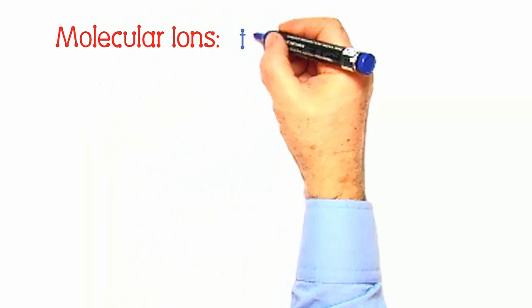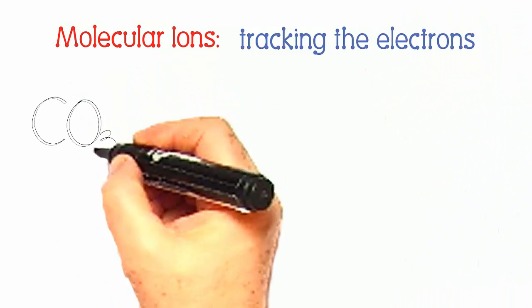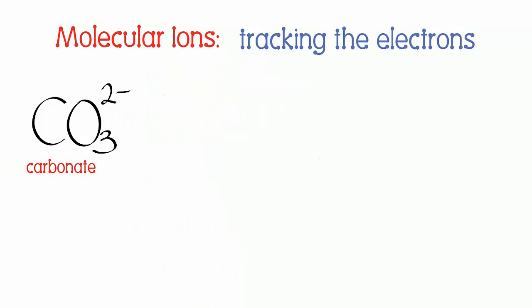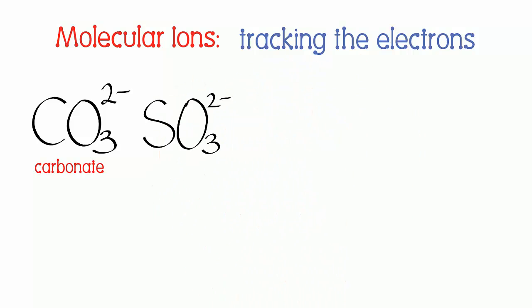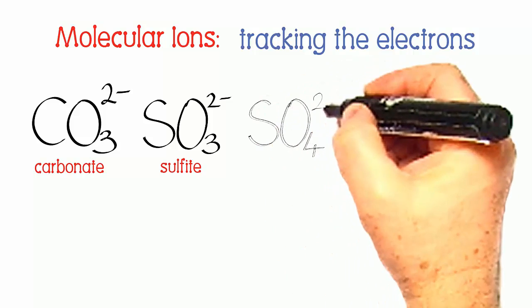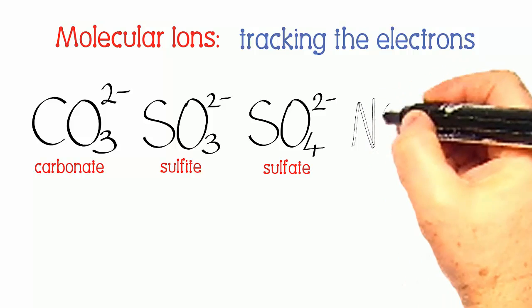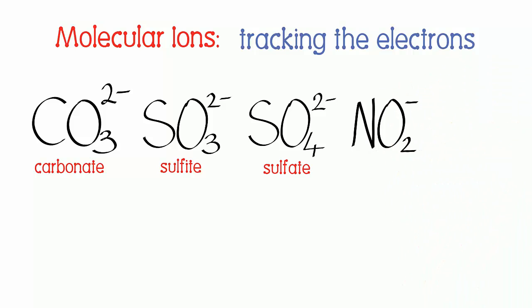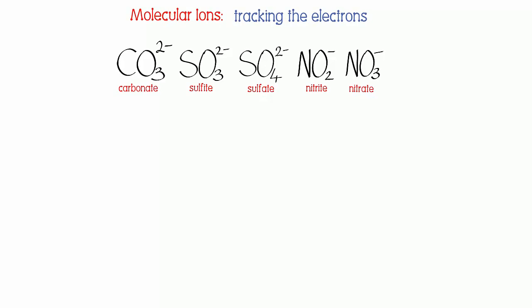In this video I take a look at molecular ions, tracking the electrons present and explaining the charge on the ions. I look at the CO₃²⁻ ion, the carbonate ion. I look at two oxy ions of sulfur: the sulfite ion SO₃²⁻ and the sulfate ion SO₄²⁻. I'll also take a look at two oxy ions of nitrogen: the nitrite ion NO₂⁻ and the nitrate ion NO₃⁻. Five different molecular ions, one at a time.